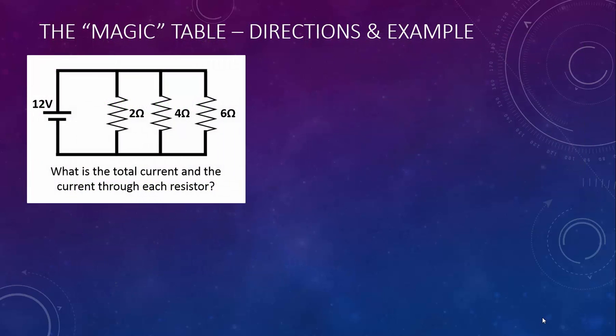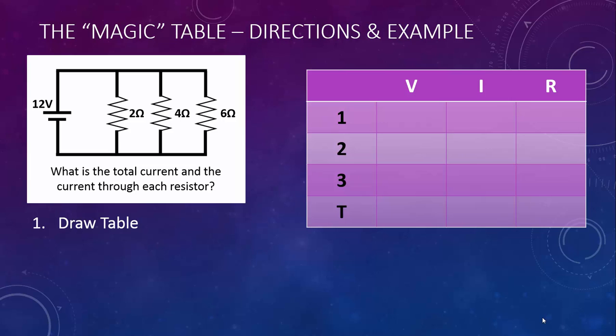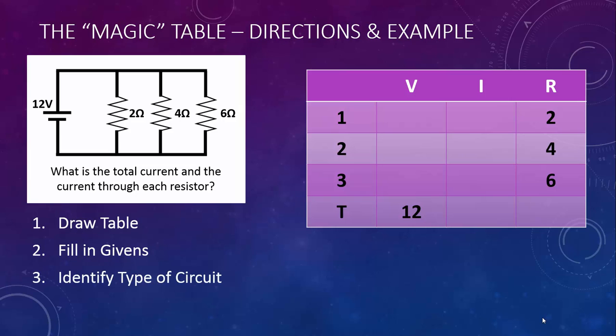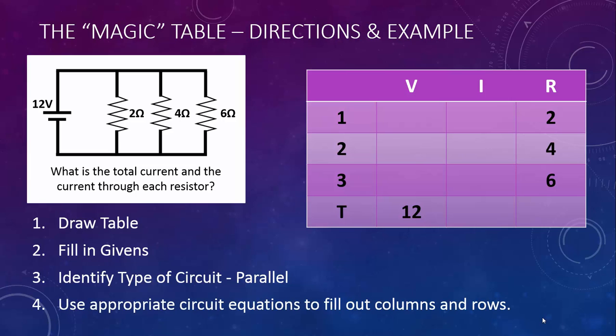Let's look at an example. Here's a parallel circuit with a 12-volt source of potential and three resistors: 2 ohms, 4 ohms, and 6 ohms. We want to find the total current of the circuit and the current through each resistor. First, draw a table. Next, fill in the givens. Then identify the type of circuit — this is clearly a parallel circuit. I suggest covering the series circuit equations on your reference table with your calculator so you don't even see them. Since this is a parallel circuit, the potential difference across each resistor equals the potential difference of the source — all of the voltages are 12.